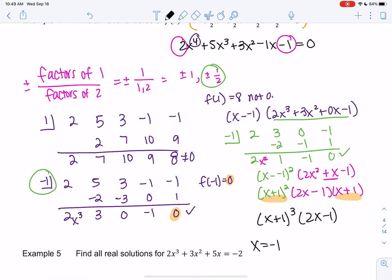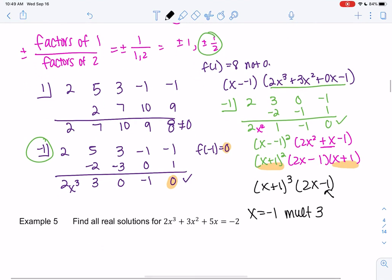And then what I notice is actually the plus 1 shows up again, so it actually had a multiplicity of 3. And 2x - 1. So we have x = -1 with a multiplicity of 3, and then 2x - 1 would give me 1/2 with a multiplicity of 1. And notice 1/2 was one of my possible zeros. So if you are getting a rational one, it should fit that pattern. The only reason it doesn't fit that pattern is because it's irrational or it's complex.